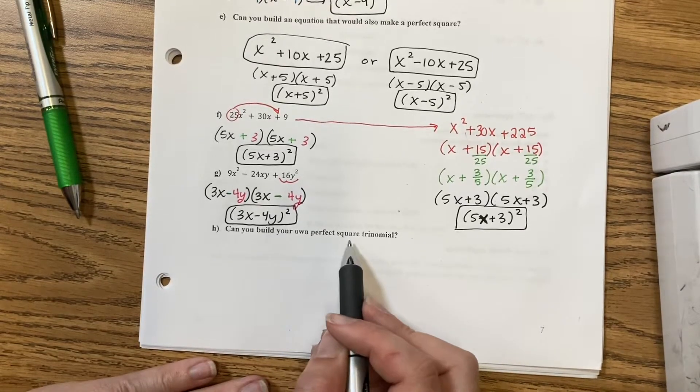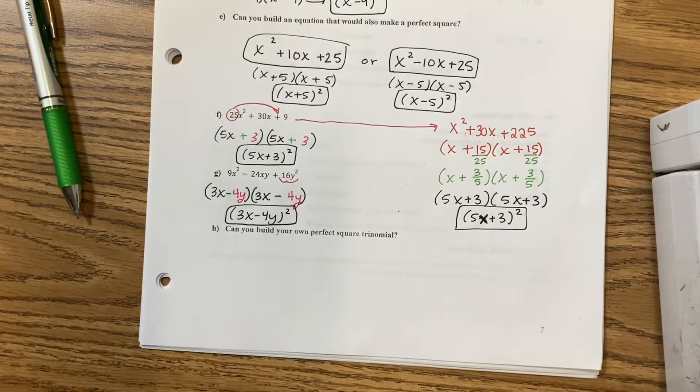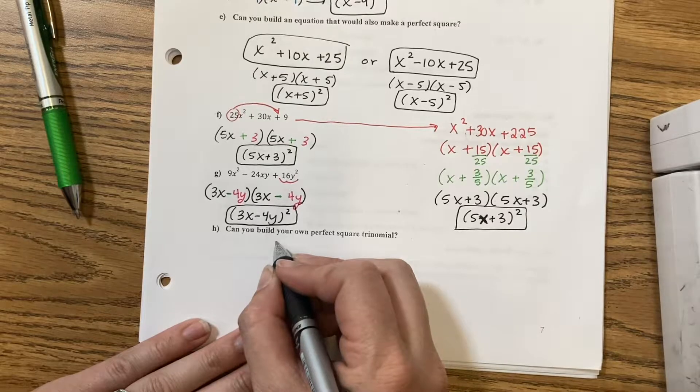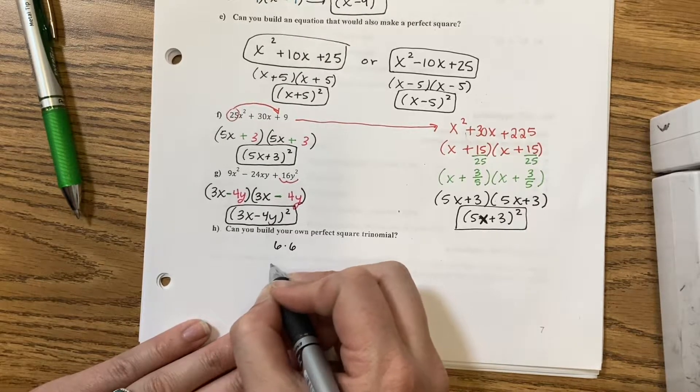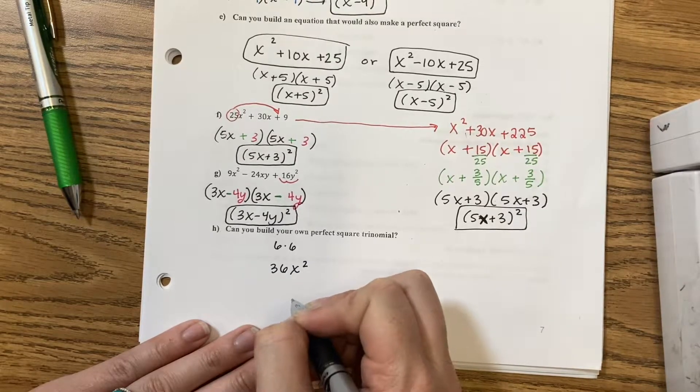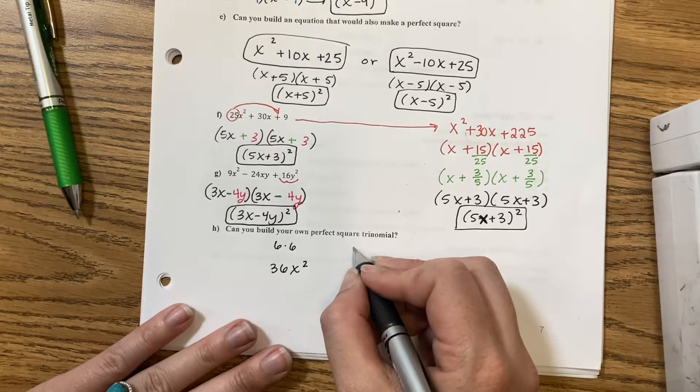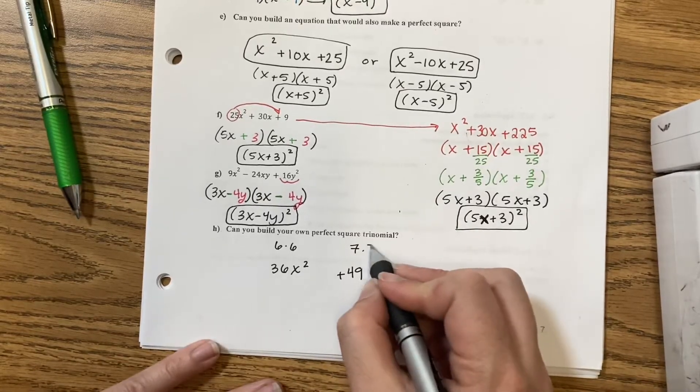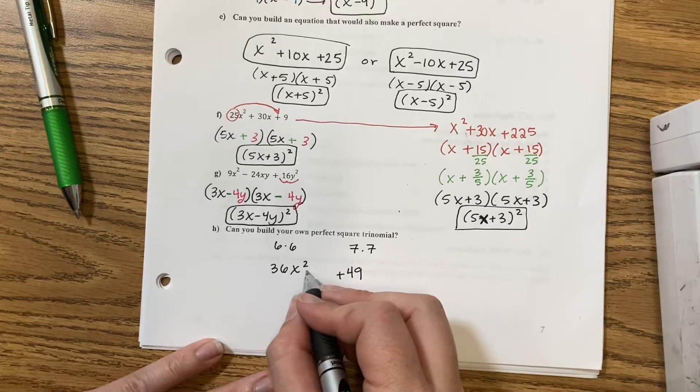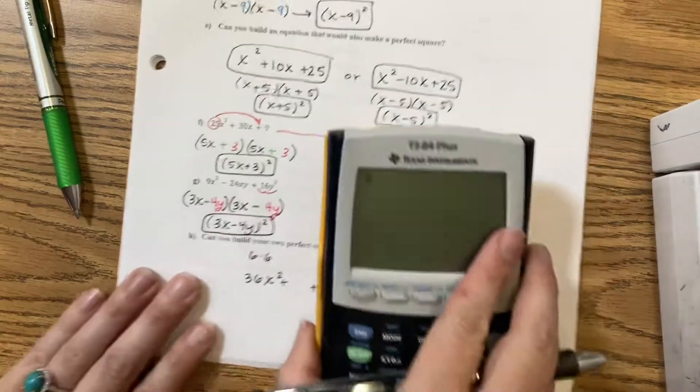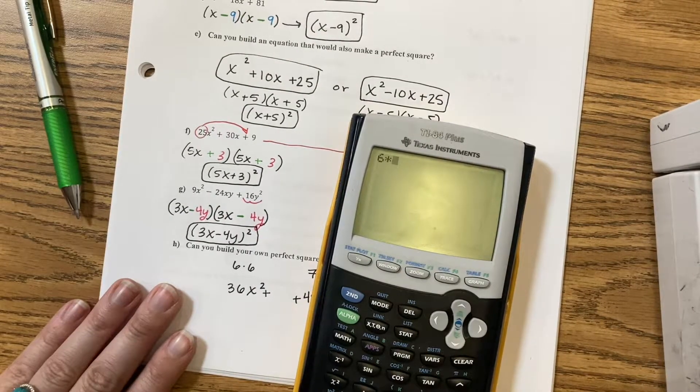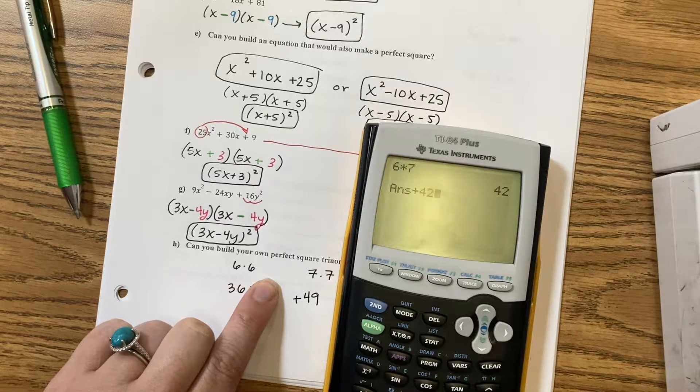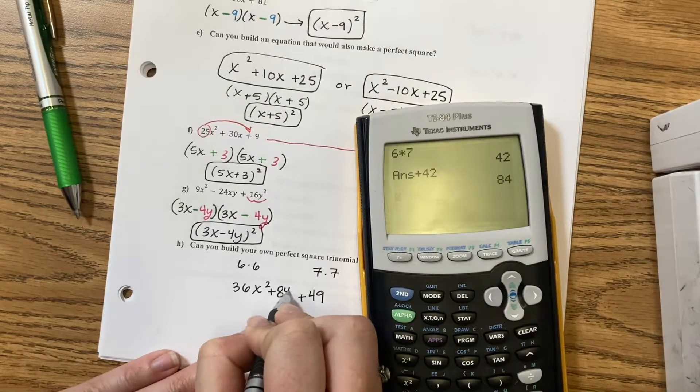Can you build your own perfect square trinomial? Let's try and build one. I'm going to use 6. 6 times 6 is 36. And at the back, I'm going to use 7. 7 times 7 is 49. Which means the middle, I'm going to use a plus sign, would be 7 times 6. And then, I need to do another 7 times 6. So, plus another 42 makes a total of 84. 84x is in the middle.